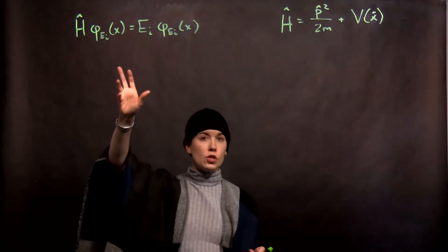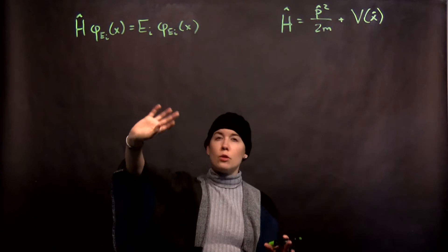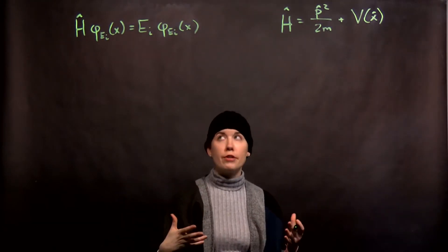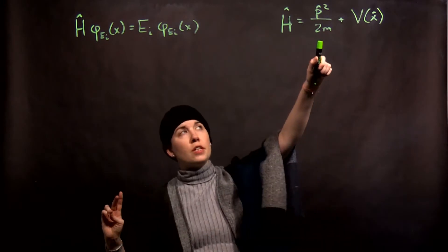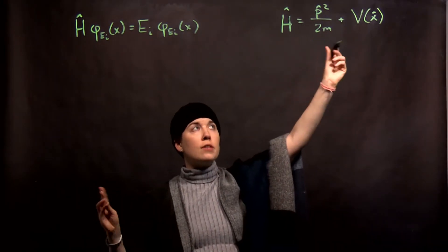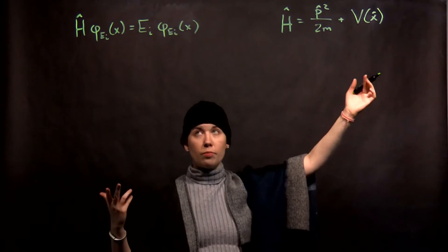Let's work a little bit now with our energy eigenvalue equation now that we've learned a little bit more about our operators. We've said that our Hamiltonian in the position representation is our momentum operator squared over 2m plus the potential energy as a function of position.